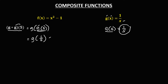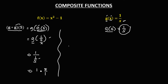To find the value of g of 1 over 5, from g of x, x is equal to 1 over 5. So this becomes 1 over x, where x equals 1 over 5. To simplify, we have 1 times the reciprocal of 1 over 5, which is 5 over 1.